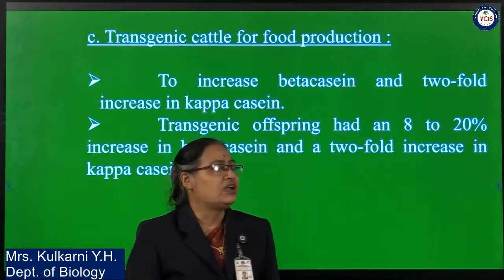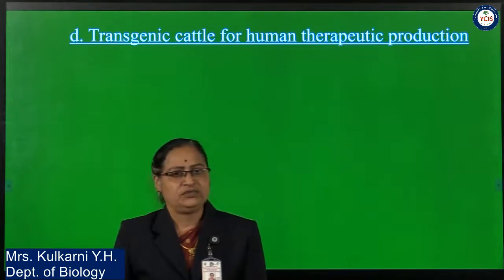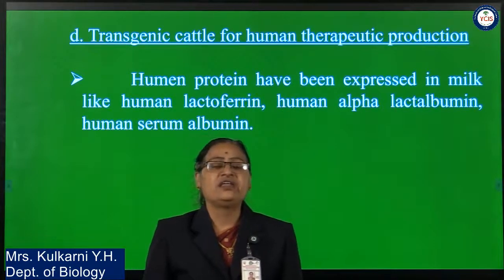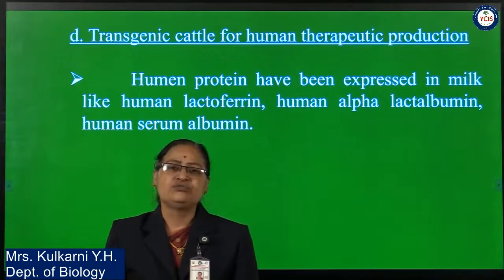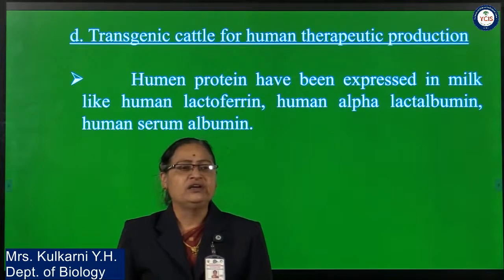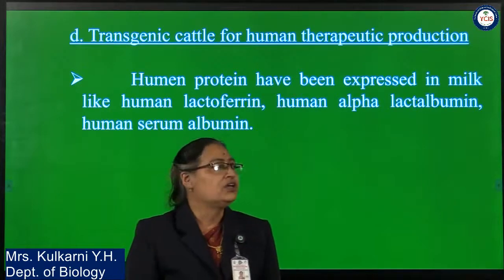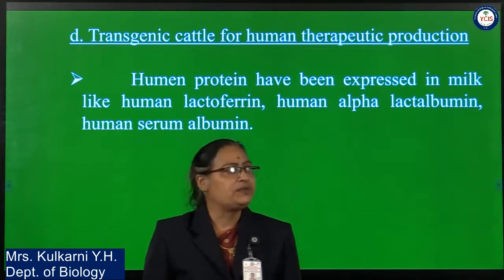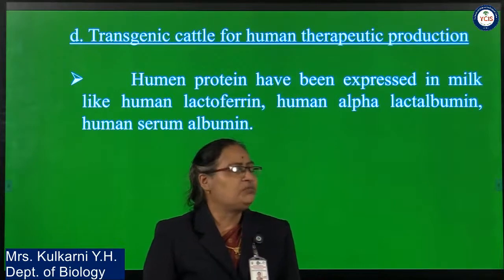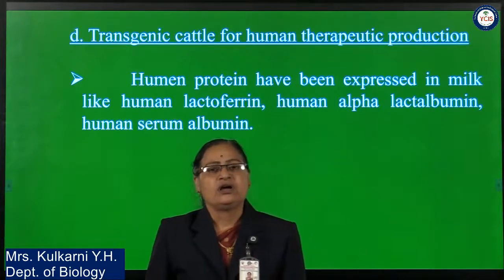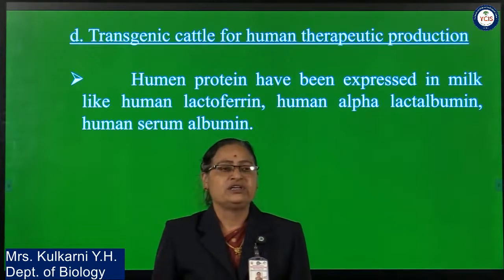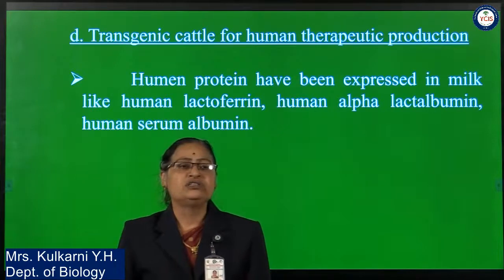Transgenic cattle are also used for human therapeutic products — this is a secondary application. The primary application is to improve meat production, milk yield, milk quality, wool quality, and wool quantity. The secondary application is that human proteins have been expressed in milk, such as human lactoalbumin, for human therapeutic production. The mammary gland of dairy cow is the best example for the protein production industry.